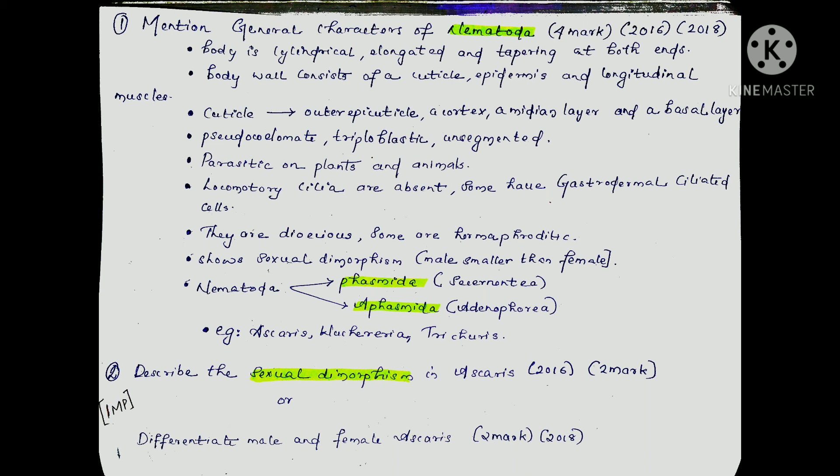Main characters: first, the body. The body is cylindrical in shape and tapered along its length. The body wall consists of cuticle, epidermis, and longitudinal muscles. The cuticle is multi-layered, consisting of an outer epicuticle, a cortex, a median layer, and a basal layer.